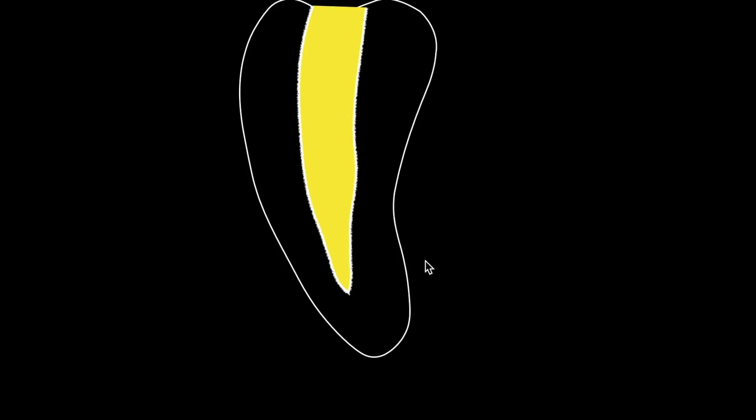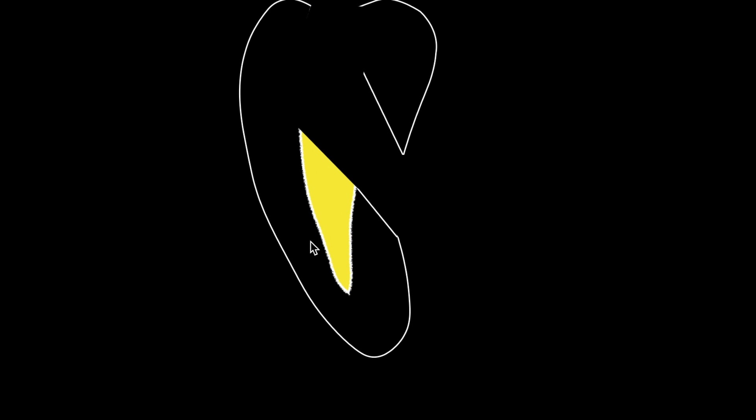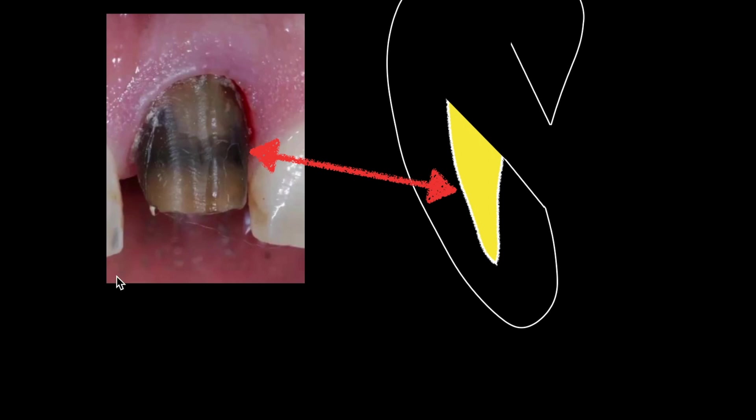Here's a side view of a maxillary central incisor and here is the pulp tissue inside. And this is when we make our smaller access to conserve tooth structure. And sometimes when we do this type of access as compared to the conventional, we leave this type of pulp tissue right here. And it's hard to see it if you're not using a microscope or high-powered loupes. And whether the tooth is necrotic or vital, we need to remove this tissue from this area of the pulp chamber because it may cause the endo to fail down the road and or potentially cause a darkening of the coronal tooth structure like in this case.